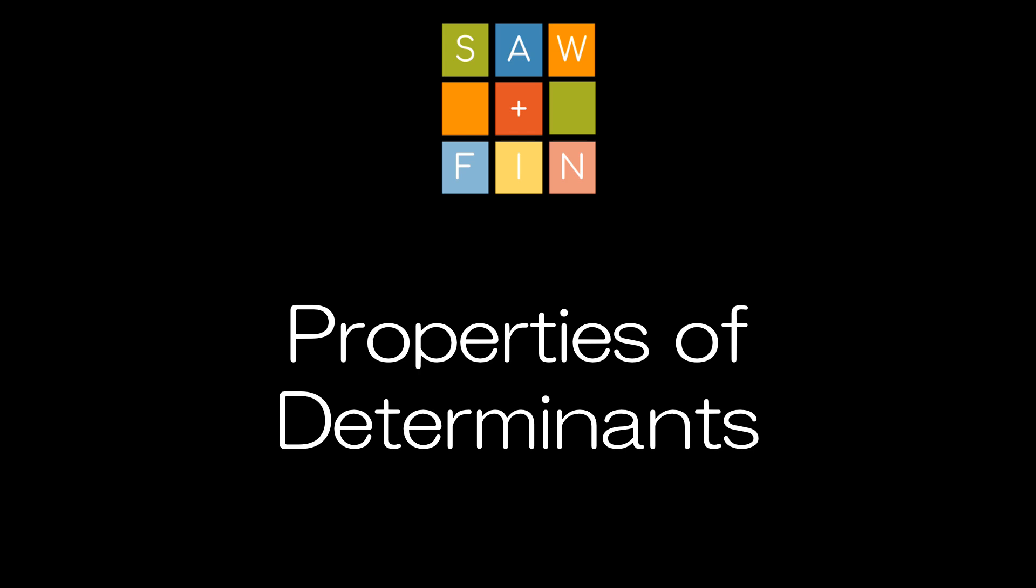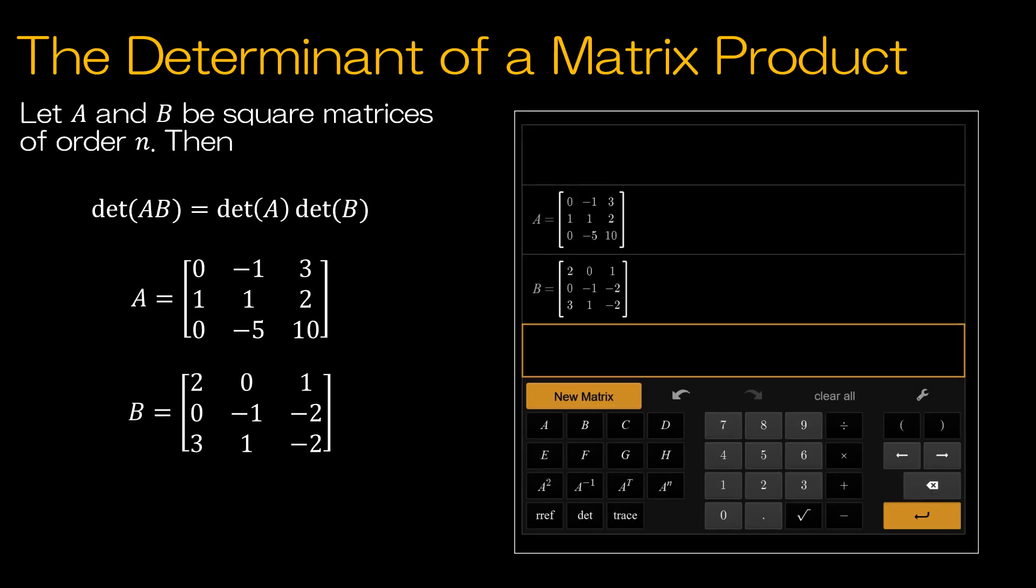Properties of Determinants. Our first property of matrices says that if we find the determinant of A times B, it's equivalent to finding the determinant of A multiplied by the determinant of B. So for this video, I'm just going to verify these to you.